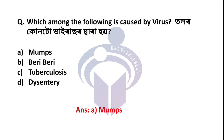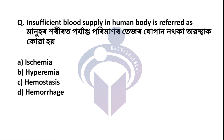Next question: Insufficient blood supply in the human body is referred to as — the correct answer is option A: ischemia. In ischemia, there is insufficient oxygen supply, availability of nutrients is reduced, and metabolic waste removal is inadequate.